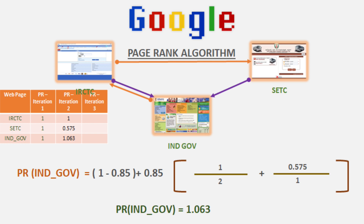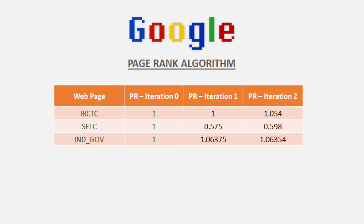The last one is the PageRank of Indian Government. We will check it out. PageRank of IRCTC divided by IRCTC's outgoing links — IRCTC page rank is 1, outgoing links is 2, so divided by 2. Next, SETC page rank is 0.575 and the outgoing link is 1, so divided by 1. The total calculated value is 1.063. We have now done 3 pages.